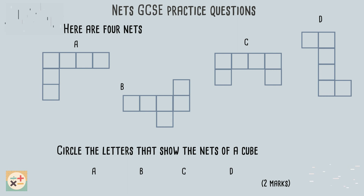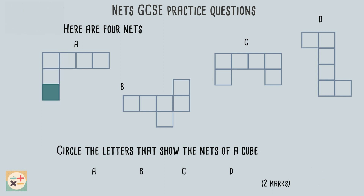Let's start with shape A. Imagine this square was the base of the cube. These two squares could be folded upwards to form two sides of the cube, and this square could be the top. However, this square would overlap the one we already have at the top, and while this square would form the side, we would be missing the other side here. Try visualizing this same net using a different square as the base — you will always end up with overlapping squares and missing sides.